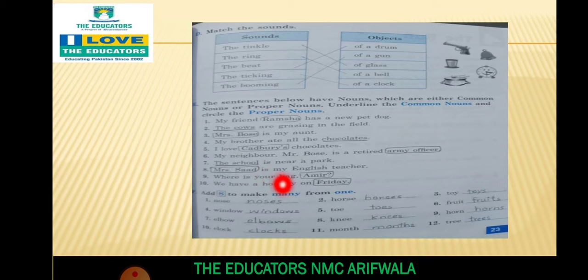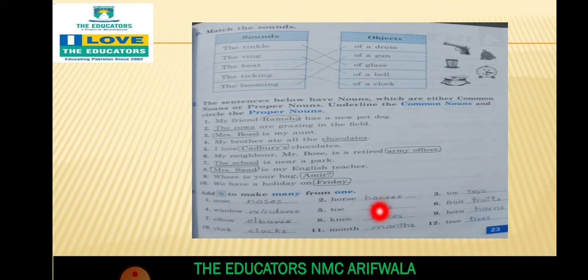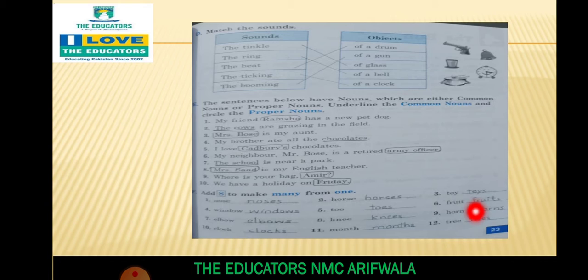Next ہے: add 's' to make many from one. ایک چیز ہے، اس میں سے جب ہم 's' کو add کر دیں گے تو وہ بہت ساری چیزیں بن جائیں گی۔ جیسے: nose → noses, window → windows, elbow → elbows, clock → clocks, horse → horses, toe → toes, knee → knees, mouth → mouths, toy → toys, fruit → fruits, horn → horns, tree → trees.